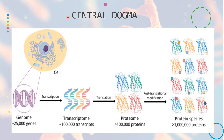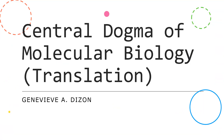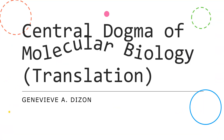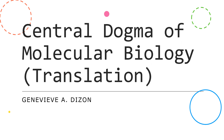That ends our three-part lecture regarding the central dogma used in molecular biology, where a genome from the cell is transcribed into a transcriptome, then translated into a proteome, and after post-translational modification, different types of functional protein species are produced for the body to use. Thank you very much for watching, and I hope you learned a lot. Bye!